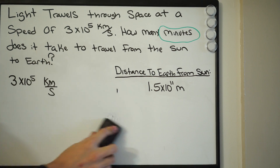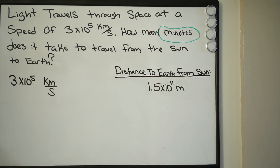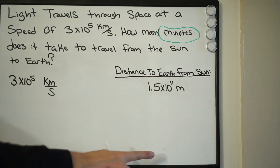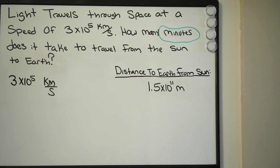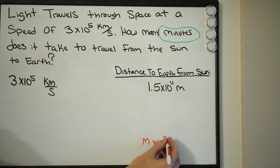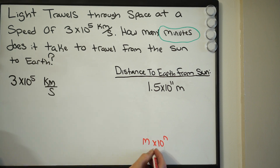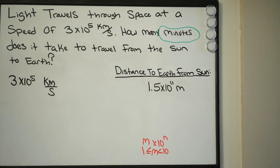Let's go ahead and erase this work. We're ready to convert our speed. Before we do this, we want to write down our rules for scientific notation. Scientific notation must be in the format m times 10 to the nth power, where m is greater than or equal to 1 and less than 10. We'll have to keep that in mind as we go through this problem, and the goal is to keep everything in scientific notation.